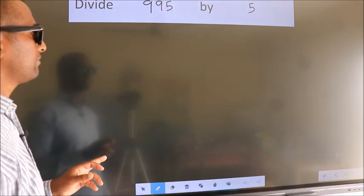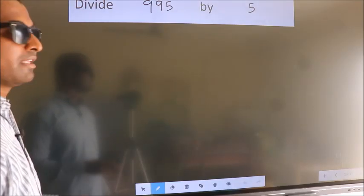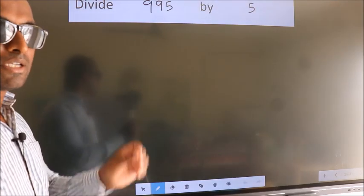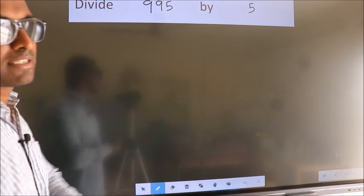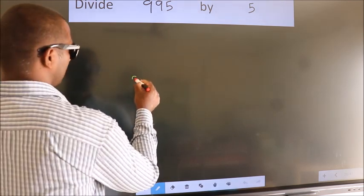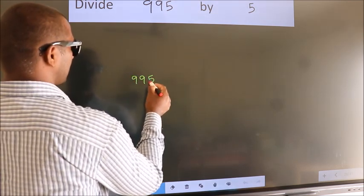Divide 995 by 5. To do this division, we should frame it in this way: 995 here.